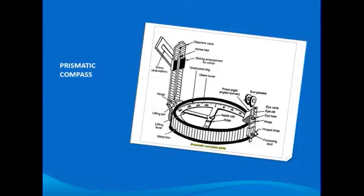To damp the oscillations of the needle before taking a reading and to bring it to rest quickly, the light spring brake attached to the inside of the box is brought in contact with the edge of the ring by gently pressing inward the brake pin.